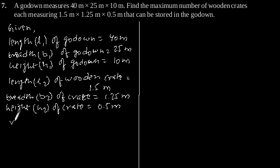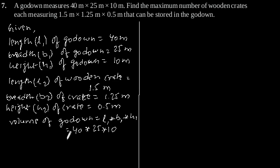So volume of godown is equal to L1 × B1 × H1, which is equal to 40m × 25m × 10m, which gives volume of godown equal to 10,000 m³.